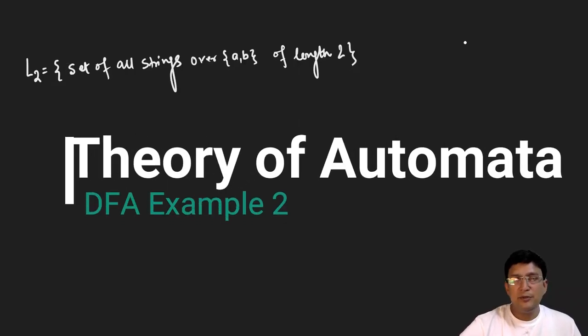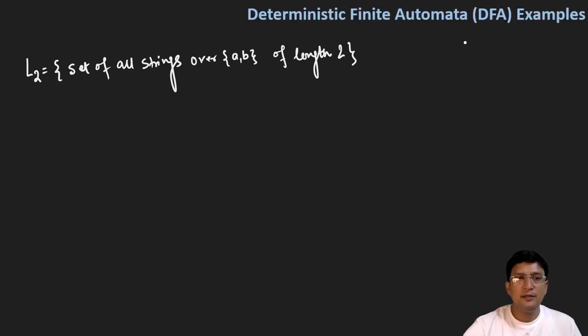Let's take one more example for the DFA. Let's say that we have a language L2 which is the set of all strings over {a, b} of length 2. So first we will list out all the strings that are part of L2. So strings of length 2 over alphabet {a, b}.